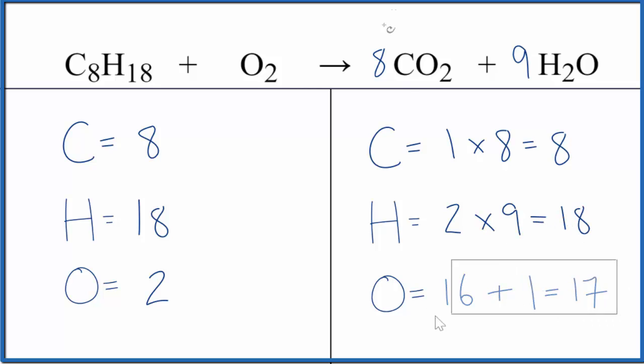Let's update the oxygens. So 8 times 2, that's 16, plus 9 times 1, that gives us 25 oxygen atoms. That's a bit of a problem, but here's how to think about it.